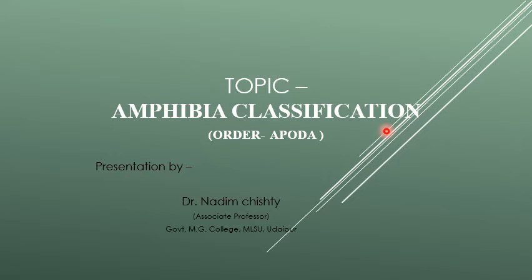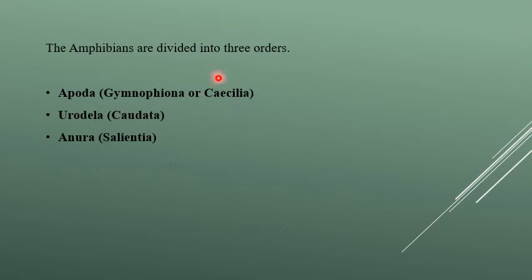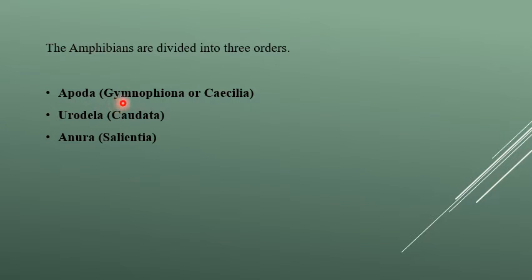Today's topic is Amphibia classification, Order Apoda. Amphibia is divided into three orders: Apoda, Anura, and Urodela. Apoda are animals without feet. The code data of Anura is Salinacea.